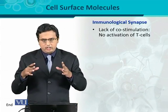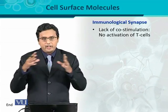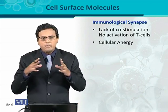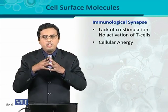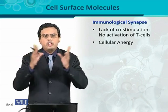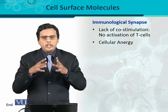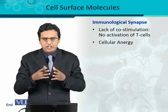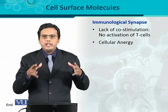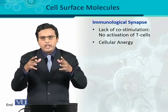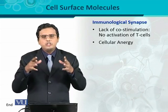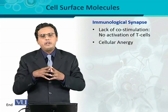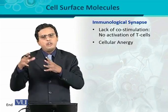The lack of co-stimulation — if co-stimulation does not happen — means there will be no proper activation of T-cells. That condition is called cellular anergy. Cellular anergy is a phenomenon in which T-cells are present and they recognize the antigen, but after recognizing it, they are not activated. They are in a form of inactivity, not suitable for performing proper action. This state is called cellular anergy, and it occurs because co-stimulatory molecules are absent or their proper ligands are not present.